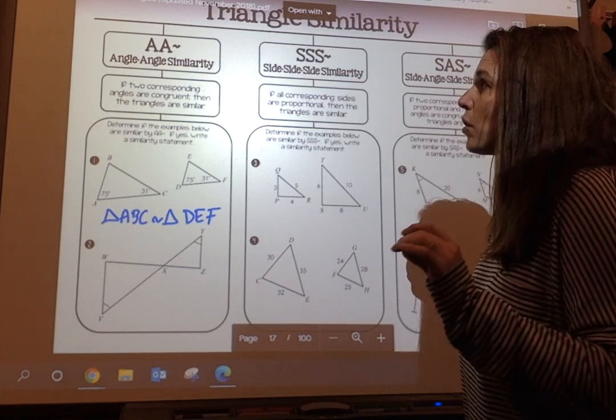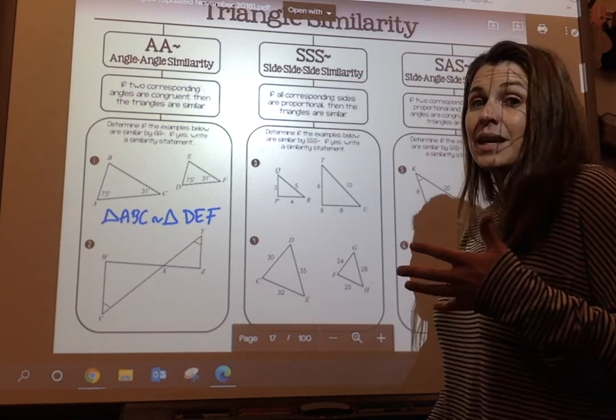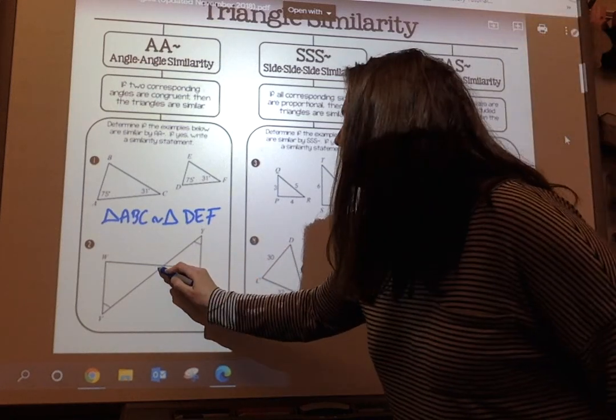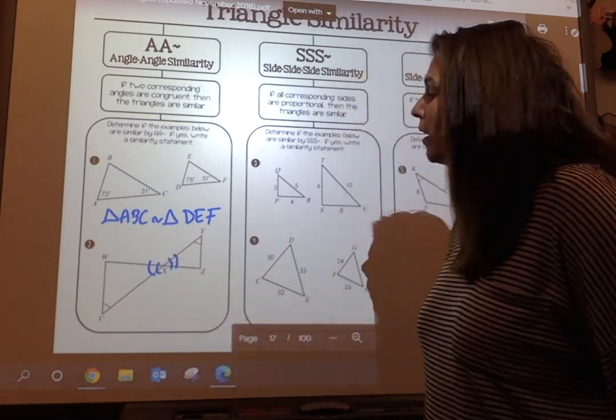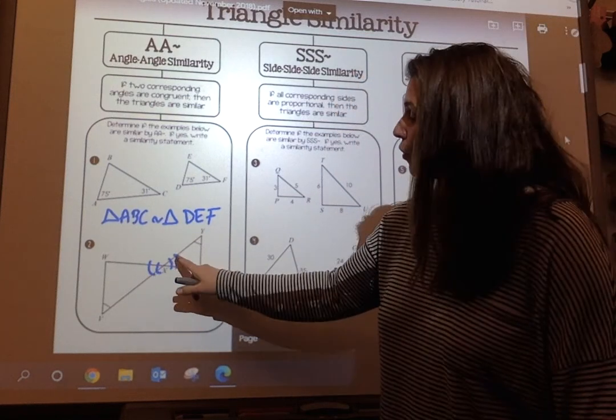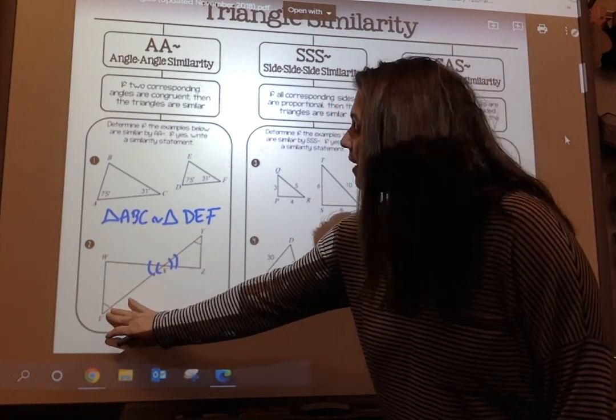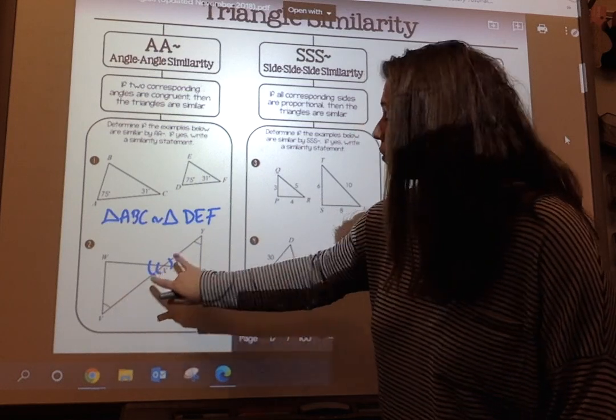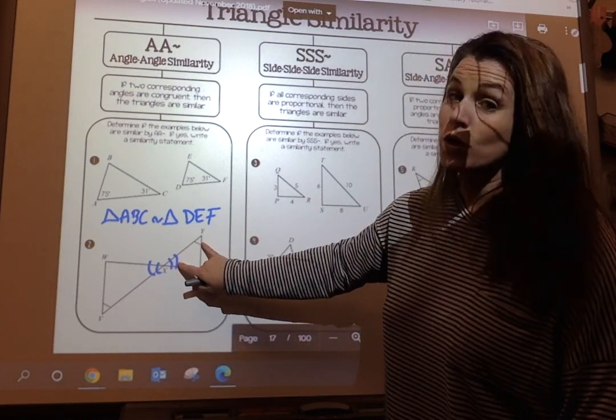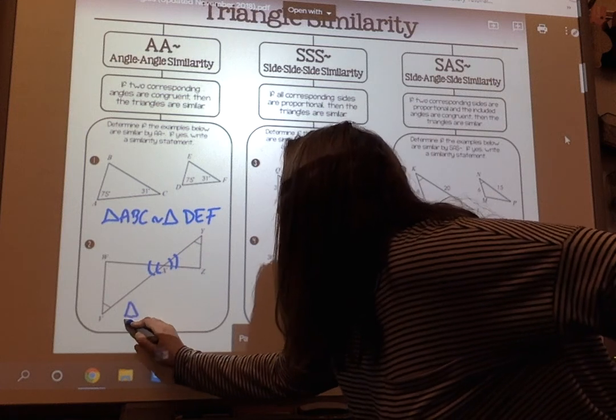So look on number two. Can I say that these triangles are similar to each other? I can because the information here, I know right away those are vertical angles. And when you have vertical angles, now it makes these two triangles, these two angles congruent to these two angles, which means I can make a statement.